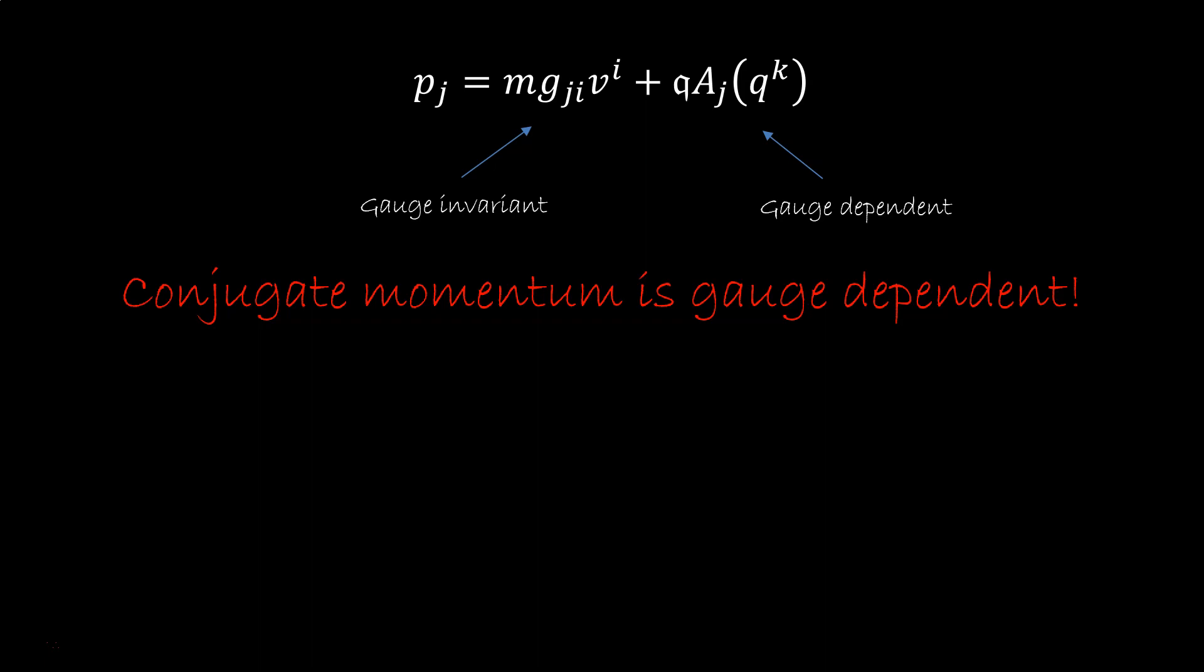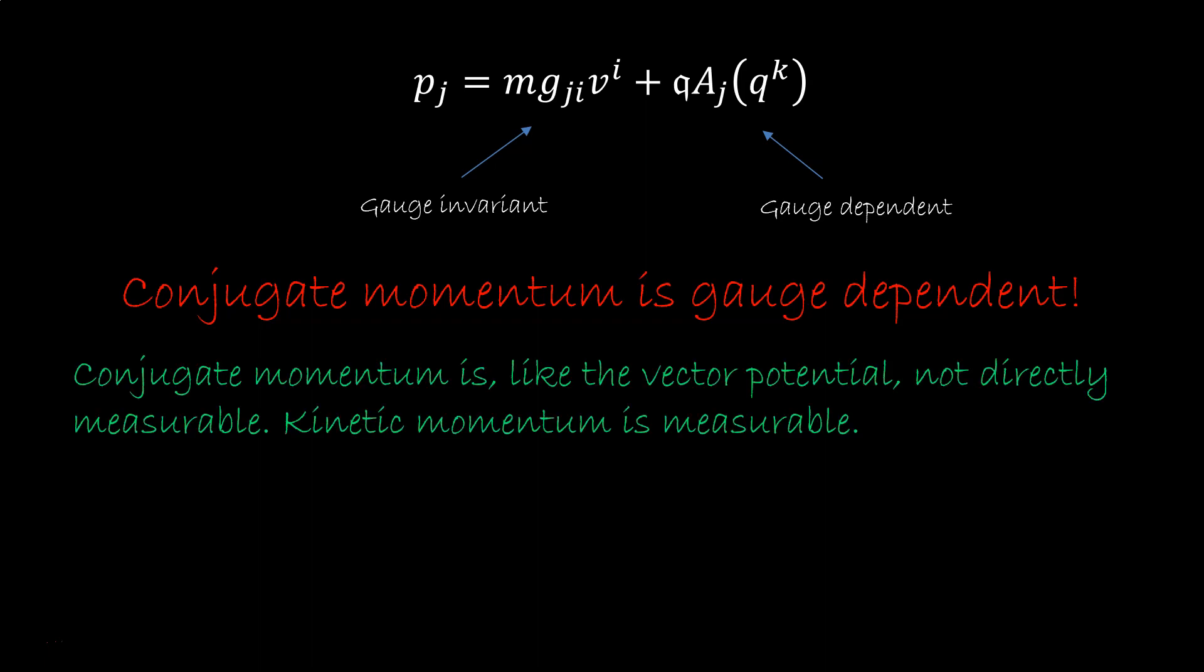The crucial thing is that gauge dependent quantities are not physical, in the sense that they do not correspond to things you can directly measure. You can't measure the magnetic potential, you measure the magnetic field. In the same way, you don't measure the conjugate momentum, you measure the kinetic momentum. This is, to me, the most important difference between p and mv. So I'll repeat it again, you don't measure conjugate momentum, you measure kinetic momentum.